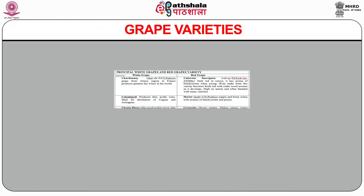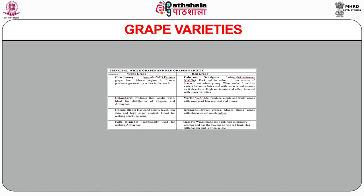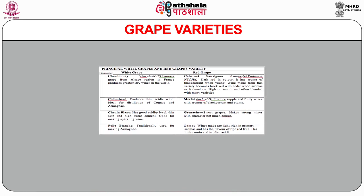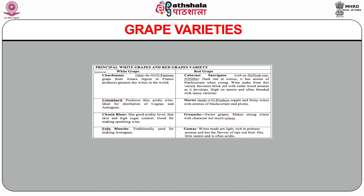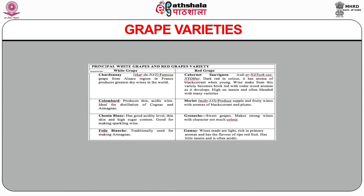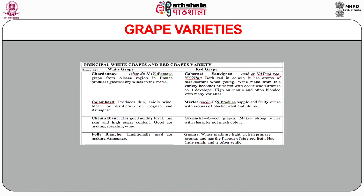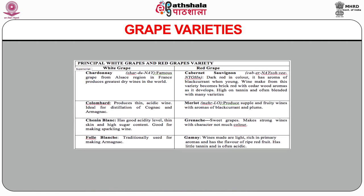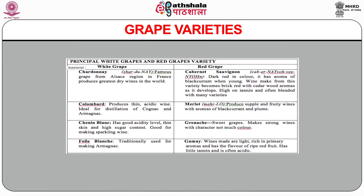Some of the principal grape varieties are: Chardonnay — a famous grape from the Alsace region of France that produces the greatest dry wines in the world. Cabernet Sauvignon — dark red in color with an aroma of black currant; when young it becomes brick red with a cedarwood aroma as it develops; high in tannin and often blended with many varieties. Colombard — produces thin acidic wine ideal for distillation of cognac and armagnac.